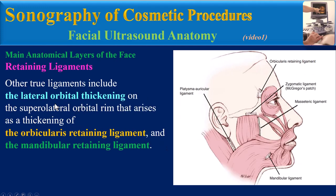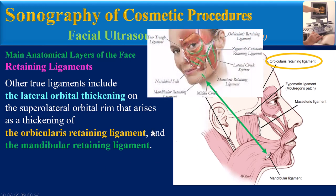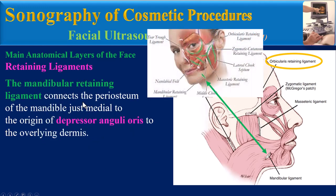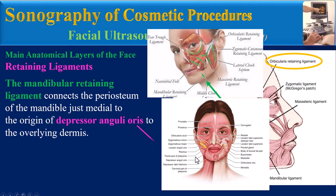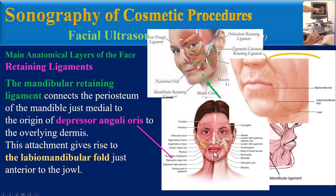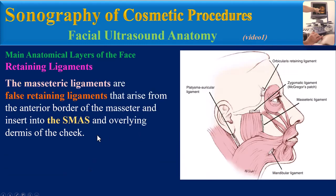Other true ligaments include the lateral orbital thickening on the supralateral orbital ring, which arises as a thickening of the orbicularis retaining ligament, and the mandibular retaining ligament. The mandibular retaining ligament connects the periosteum of the mandible, just medial to the origin of the depressor anguli oris, to the overlying dermis. This attachment gives rise to the labiomandibular fold just anterior to the jowl.